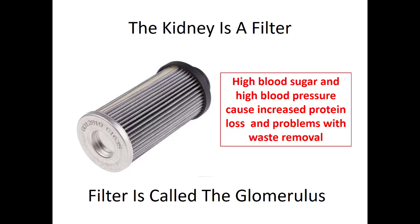Things that make the filter get clogged: high blood sugar makes it thick and hard to filter if it's chronically high. High blood pressure makes those tiny vessels delivering blood to the glomerulus smaller and under pressure, so there's less blood getting filtered. As a result, there's more protein that leaks through the filter, and there are problems removing waste — and that's what leads to kidney failure.